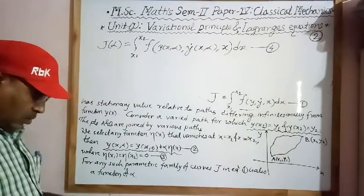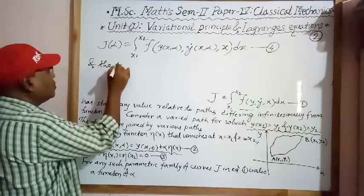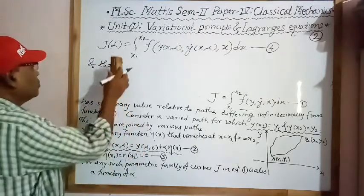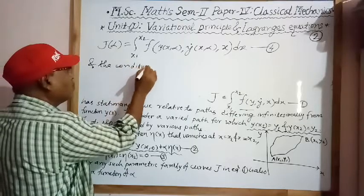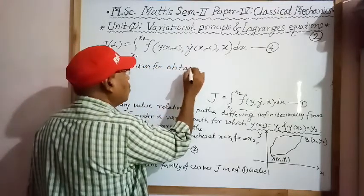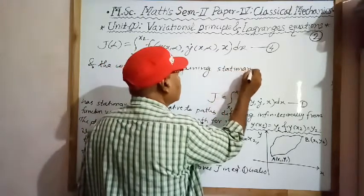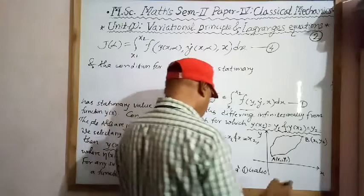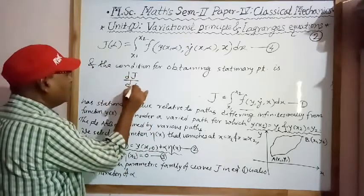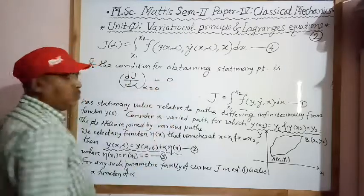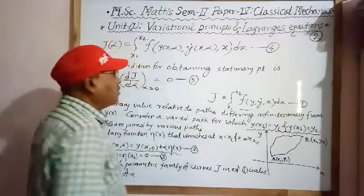Now we add the condition for obtaining a stationary point, which is dJ/dα = 0 at α = 0.